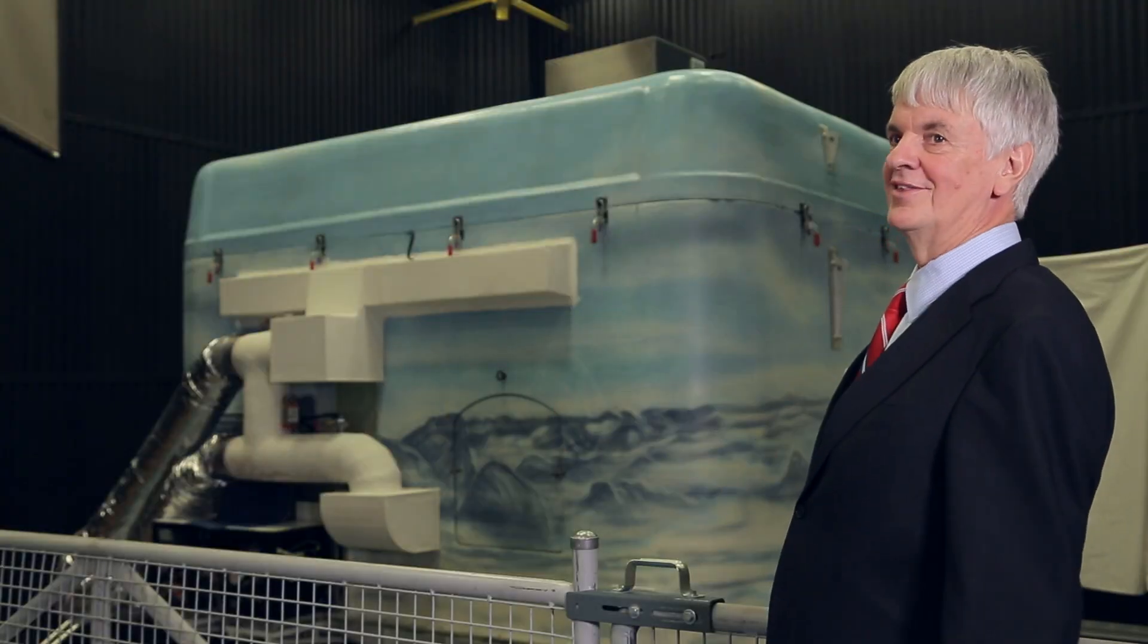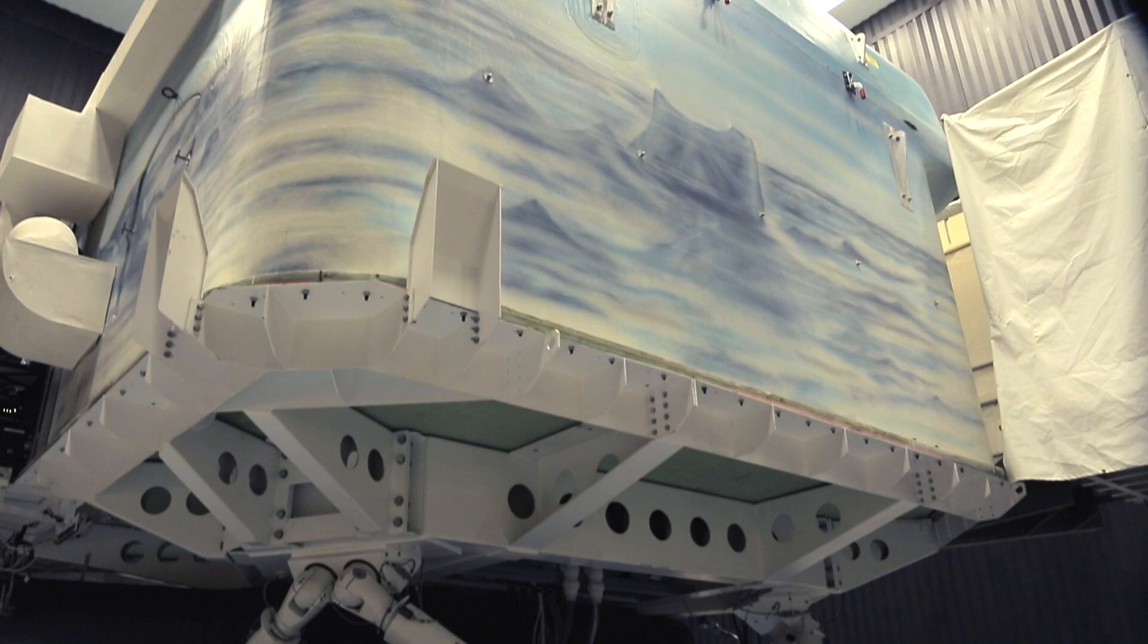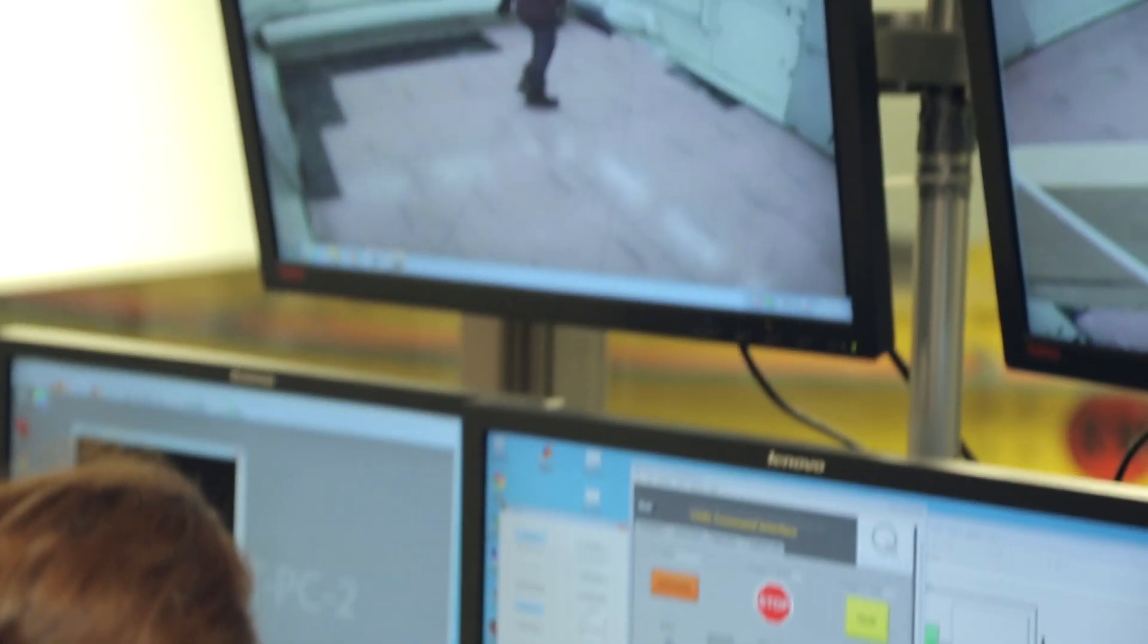You can see behind me this big cube that's painted like the Arctic. It's sitting on some stilts. The floor of it's made of real ice. We pump glycol through tubes underneath the floor, and we're able to vary the temperature of the ice very precisely.